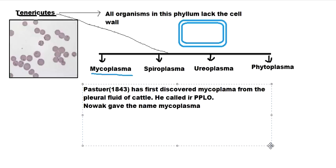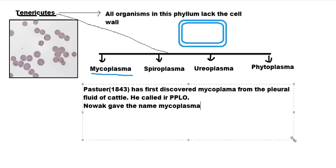Mycoplasma are actually the smallest known organisms. They are obligate parasites — they cannot live in a culture or outside a host; they will die if they are not invading any host. All organisms of Mycoplasma, and for that matter all Tenericutes, are obligate parasites and usually have one or another host.